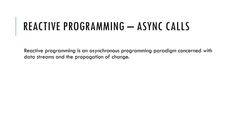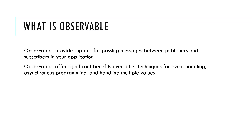What exactly is reactive programming? Reactive programming is an asynchronous programming paradigm concerned with data streams and the propagation of changes. What is Observable? Observable provides support for passing messages between a publisher and subscriber in an application. It provides significant benefits over other techniques for event handling, asynchronous programming, and handling multiple values.